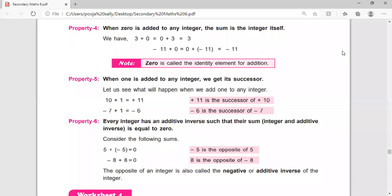Fourth property is when zero is added to any integer, the sum is the integer itself. If we add zero to an integer, then we will get the same integer. So zero is called the identity element for addition.